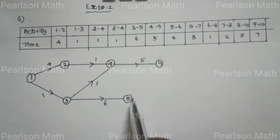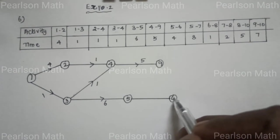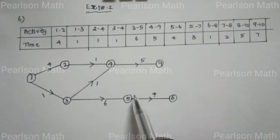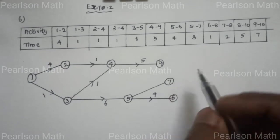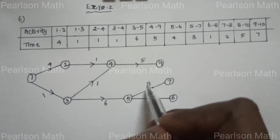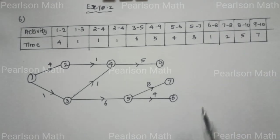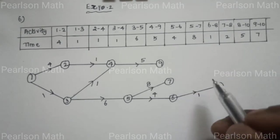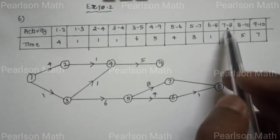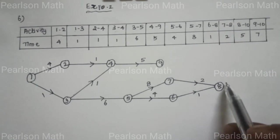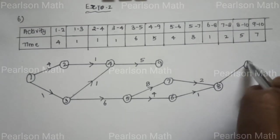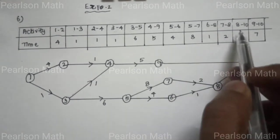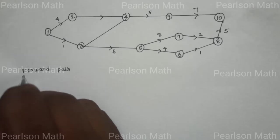Activity 5 to 6 has duration 6. Activity 6 to 7 has duration 7. We enter a line and write on node 14. Activity 9 to 10 has duration 5, and activity 8 to 10 has duration 7. Now we will go to the forward path.